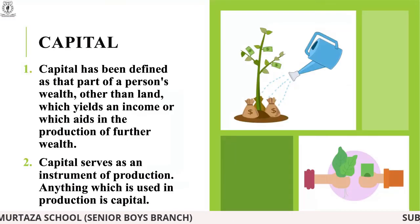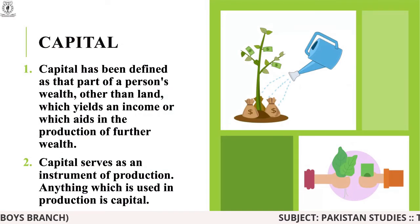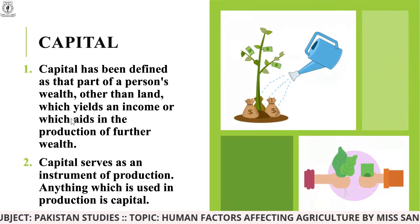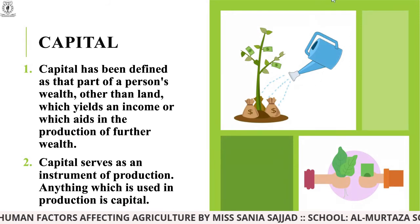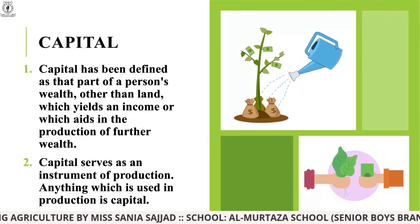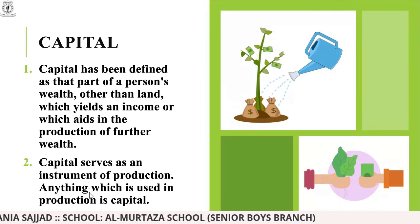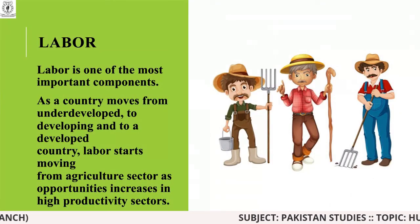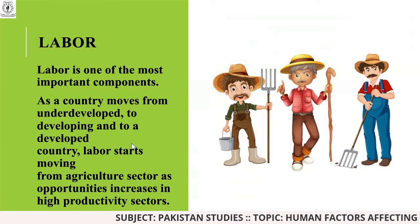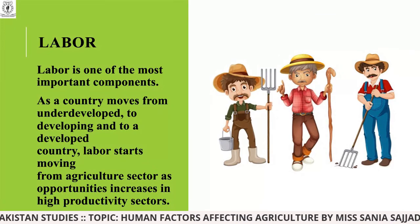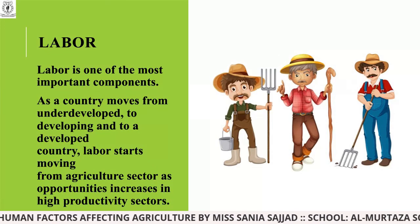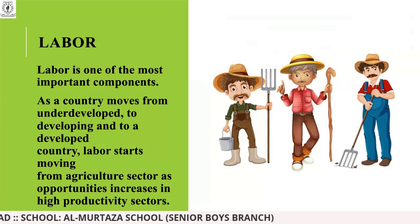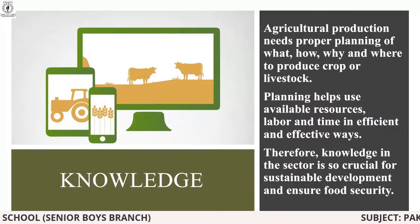Then comes capital, defined as that part of a person's wealth other than land which yields an income or aids in the production of further wealth — basically your investment, how much money you are putting into your product. Capital serves as an instrument of production. Then comes labor force: labor is one of the most important components as a country moves from underdeveloped to developing to developed, and labor in the agricultural sector creates more opportunities to grow crops and farms.